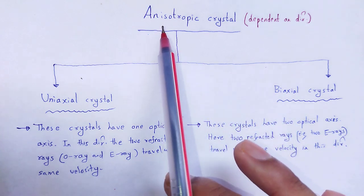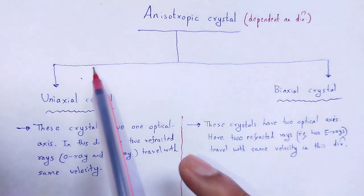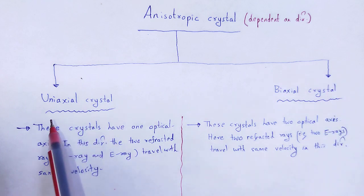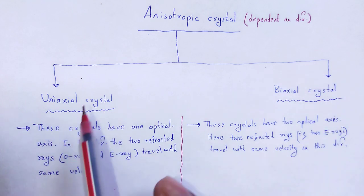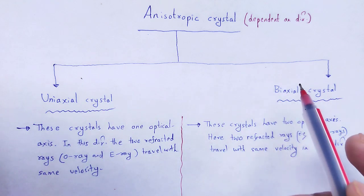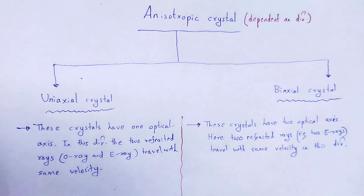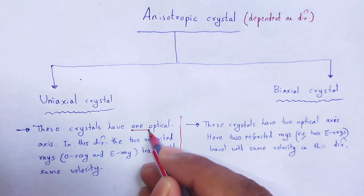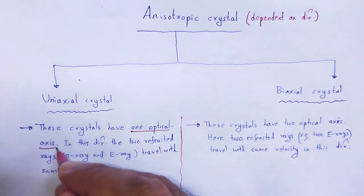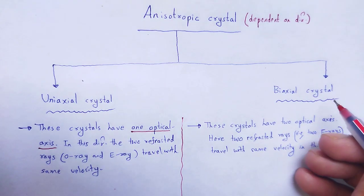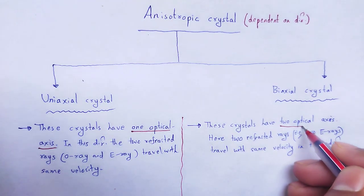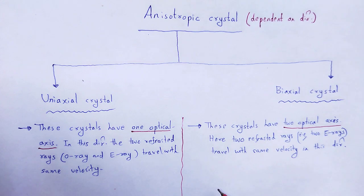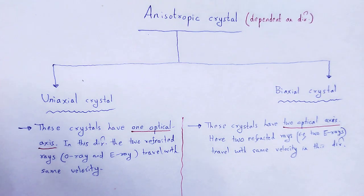Anisotropic crystals are divided into two categories: one is uniaxial crystal and another one is biaxial crystal. As the name indicates, uniaxial crystals have one optic axis and biaxial crystals have two optical axes. We have to understand what an optical axis is.